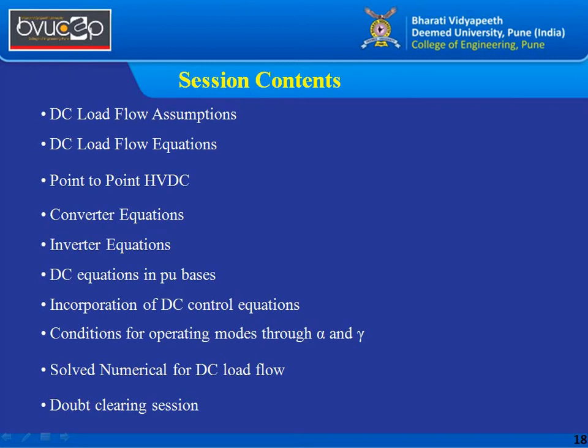Alpha represents the firing angle on the converter or rectifier side, and gamma is the extinction angle on the inverter side. We are going to see the limits in degrees for alpha and gamma, and we will consider a small DC load flow numerical. At the end, you can post any questions related to this particular lecture.